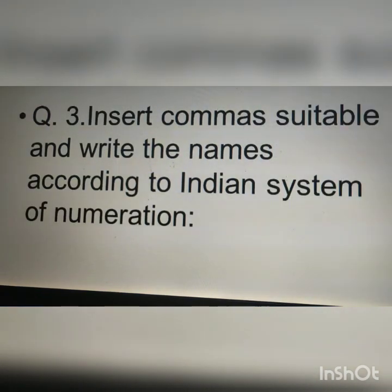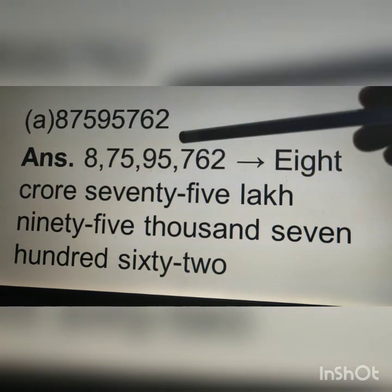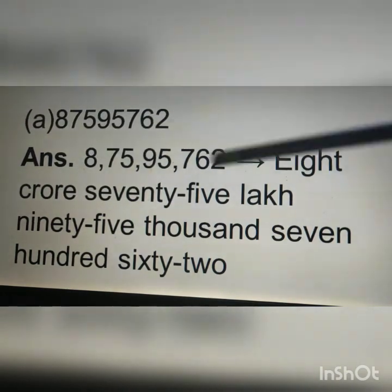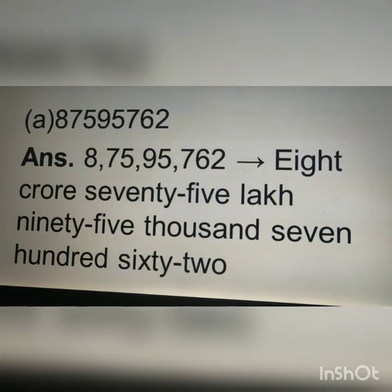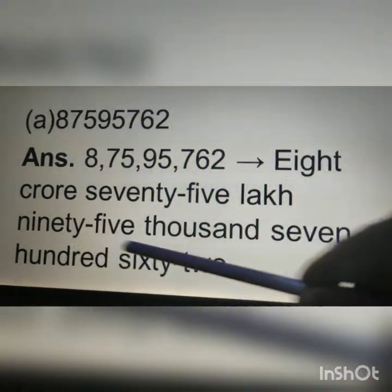Question number 3: insert commas and write the names according to the Indian system of numeration. We put commas according to the Indian system: after 3 digits from the right comes the first comma, after 5 digits the second comma, and after 7 digits the third comma. The answer is read as 8,75,95,762.